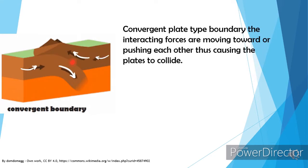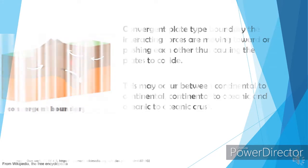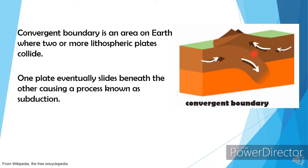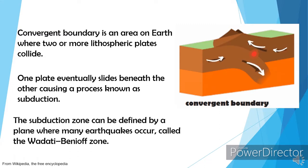Convergent plate boundary: the interacting forces are moving toward or pushing each other, thus causing the plates to collide. This may occur between continental-to-continental, continental-to-oceanic, and oceanic-to-oceanic crust. Convergent boundary is an area on Earth where two or more lithospheric plates collide. One plate eventually slides beneath the other, causing a process known as subduction. The subduction zone can be defined by a plane where many earthquakes occur, called the Wadati-Benioff Zone.